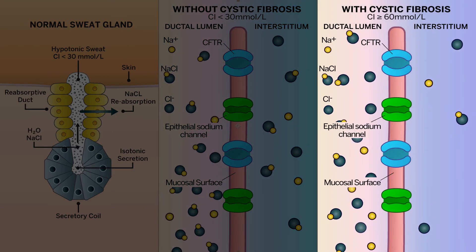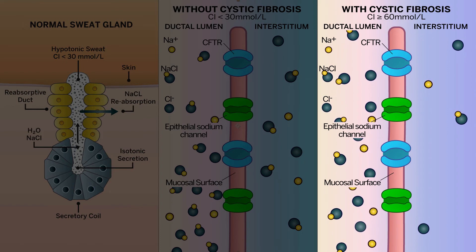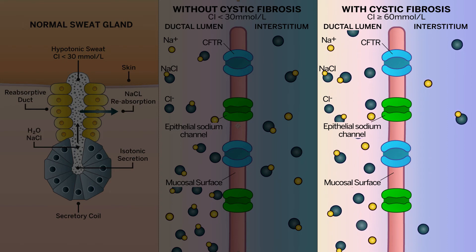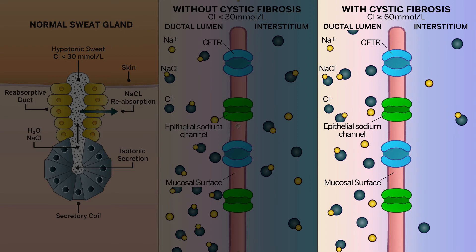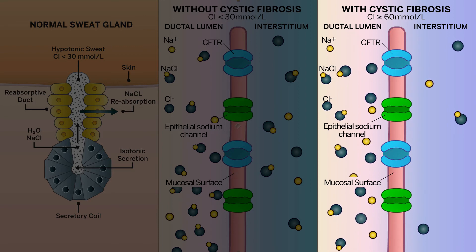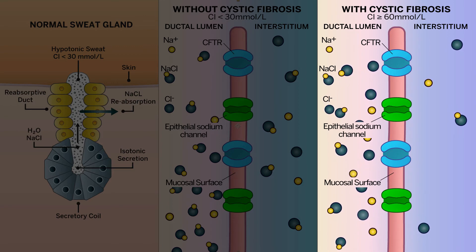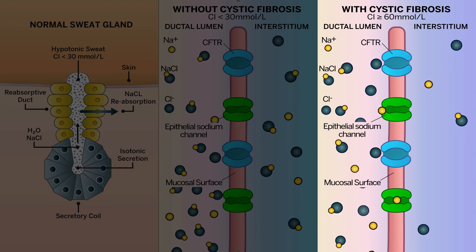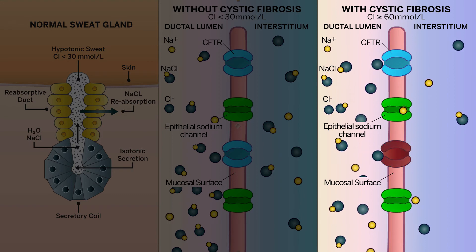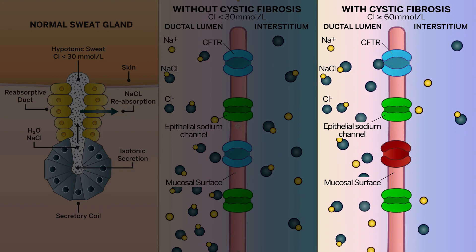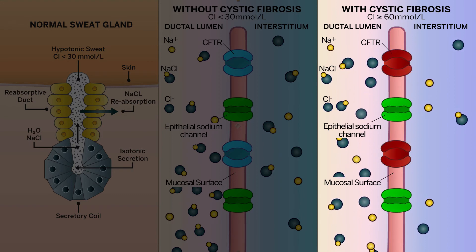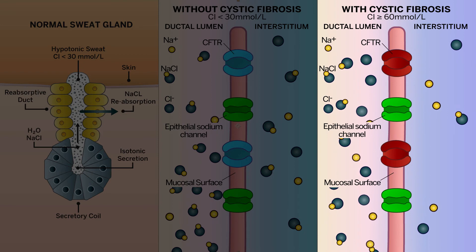For people with cystic fibrosis, functioning CFTR is not present in the reabsorptive duct. As fluid passes through, chloride remains in the ductal lumen rather than moving back into the interstitium. More sodium also remains in the fluid, as sodium and chloride tend to stay together.